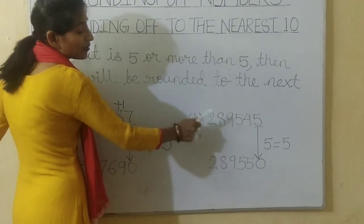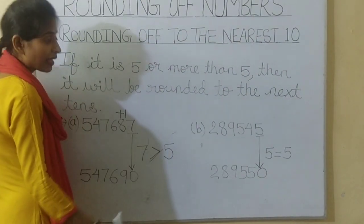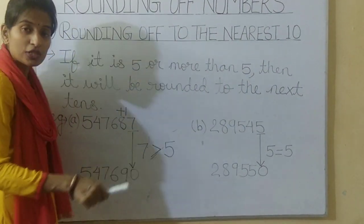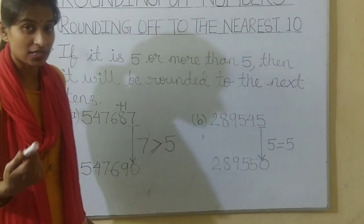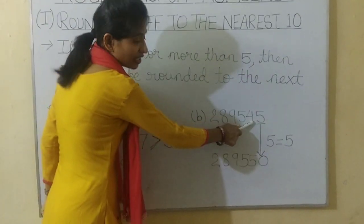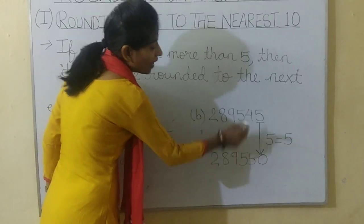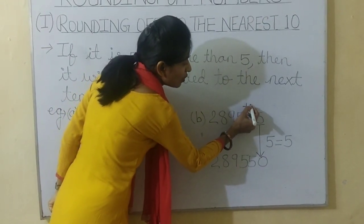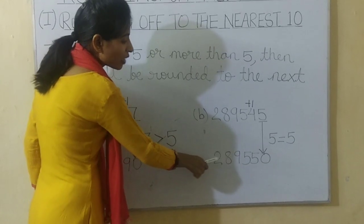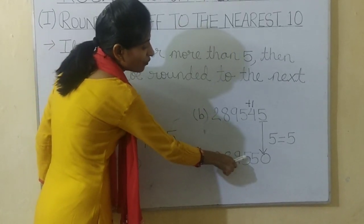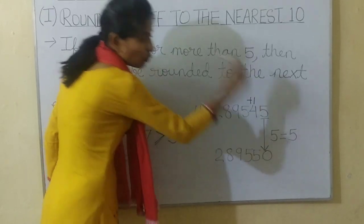Second example: here 5 is equal to 5. Then also, it will be rounded to the next ten. Here the ten's digit is 4, now it will become 5 plus 1, which is 5. So the answer will be 289550.